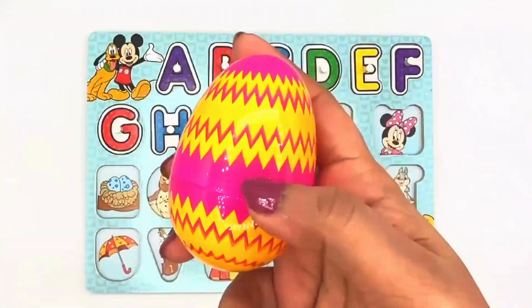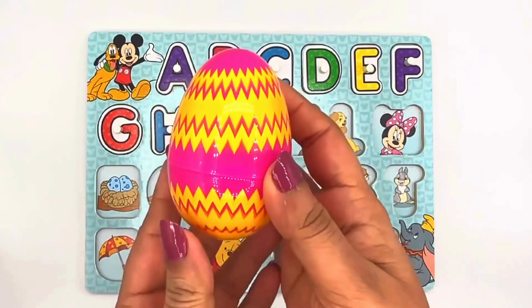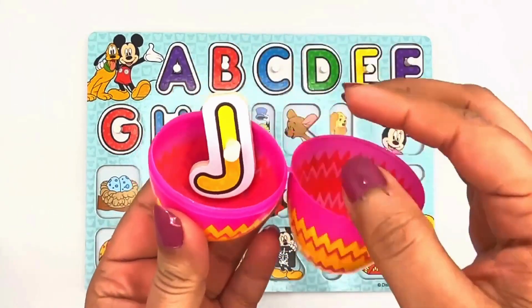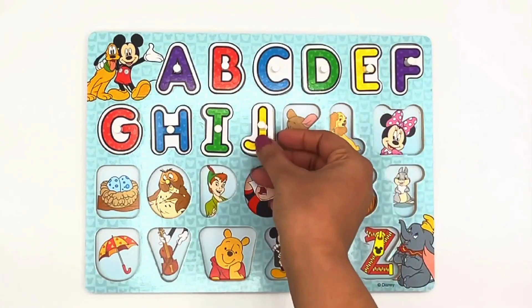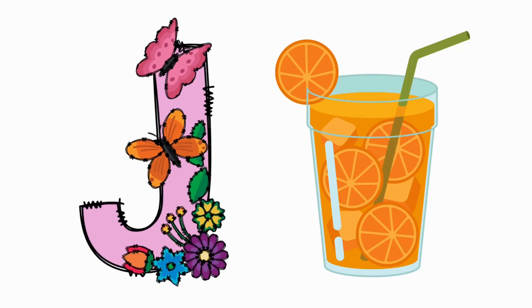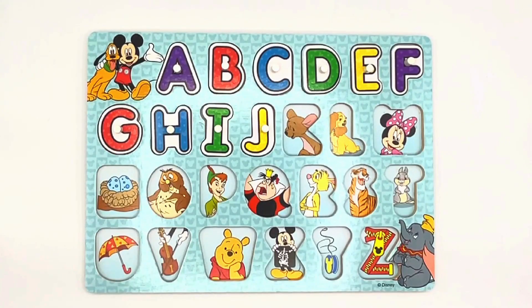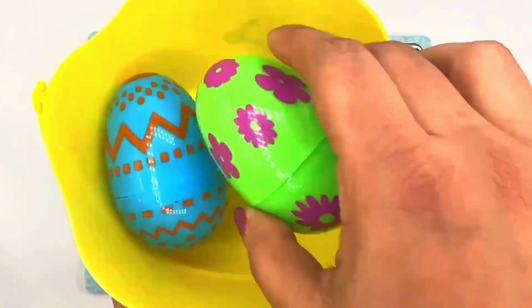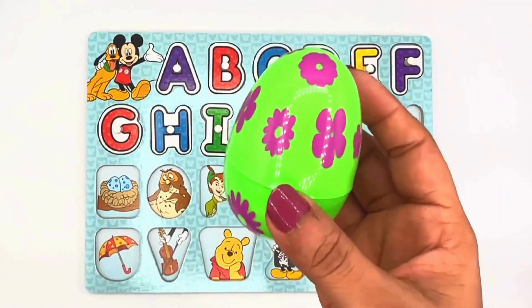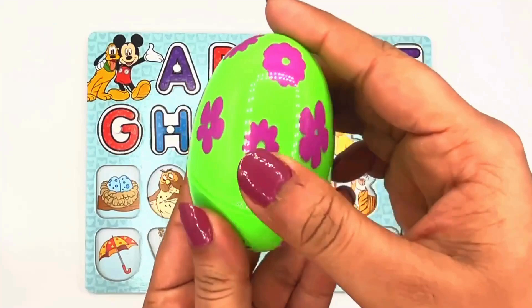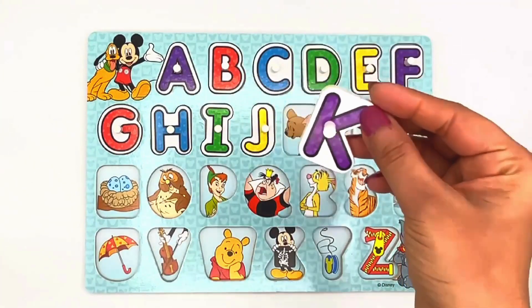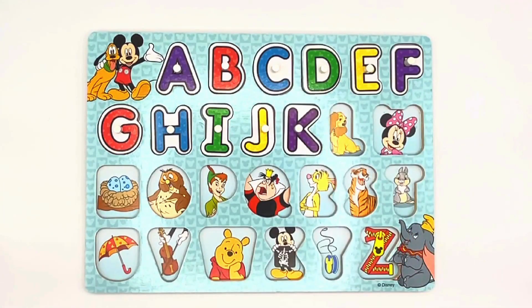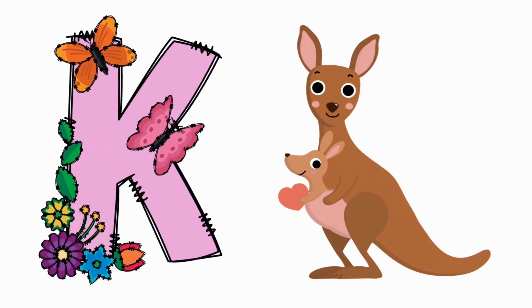Let's pick the pink egg. Let's open it. It's the letter J. J for juice. Now let's pick the green egg. Can you say open? Open. We see the letter K. K for kangaroo.